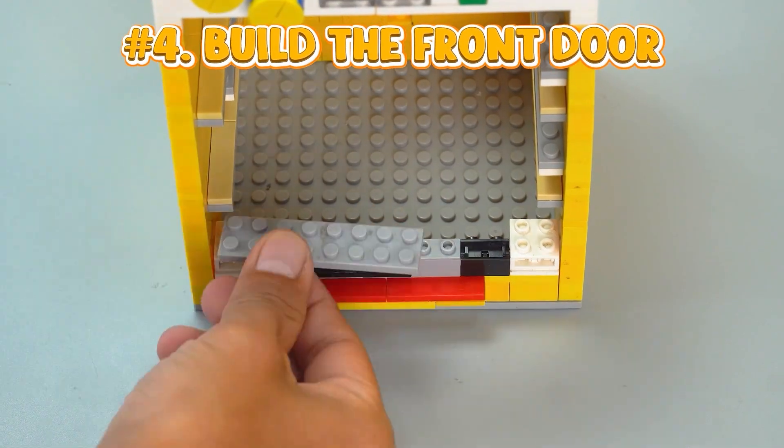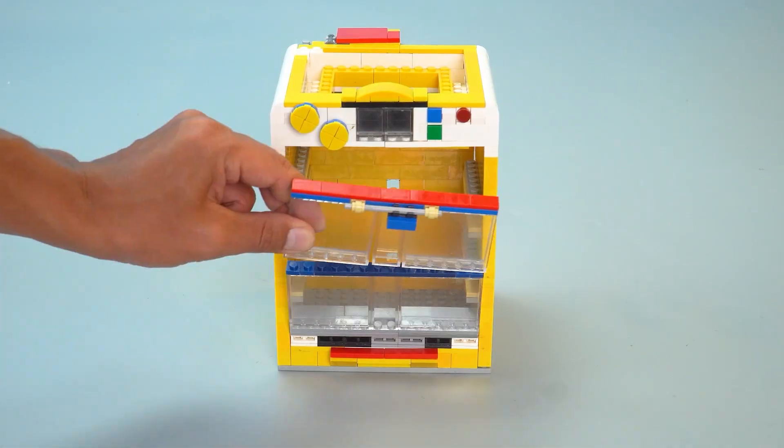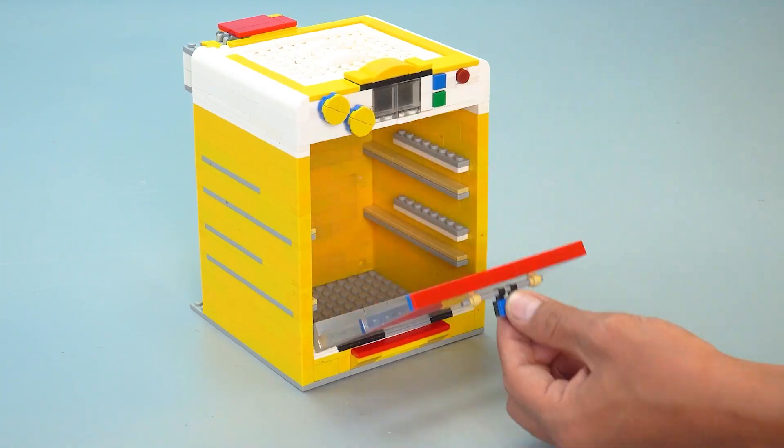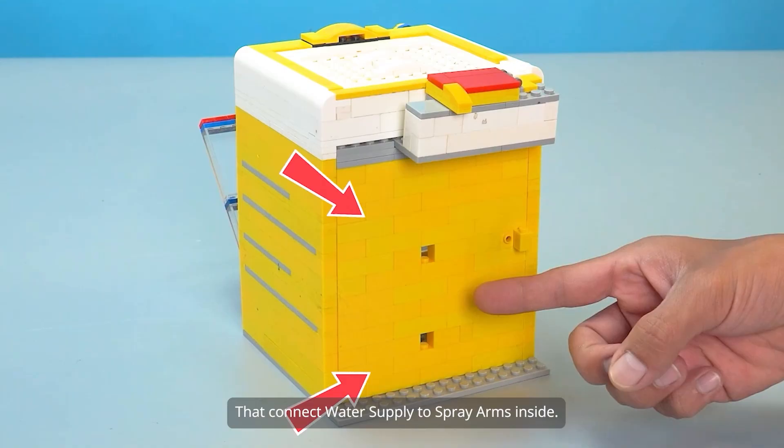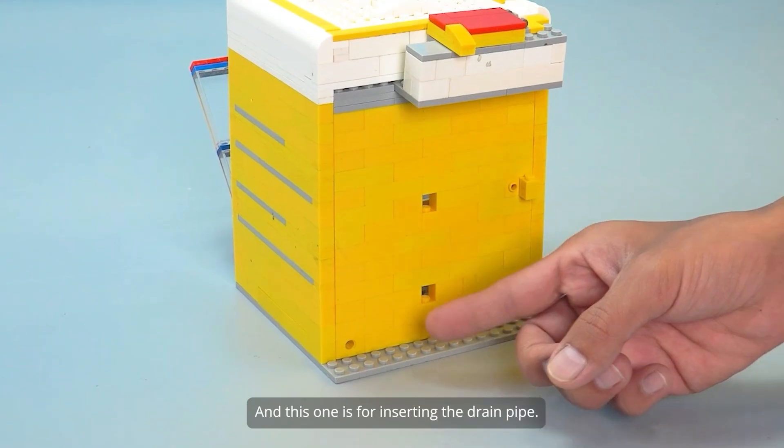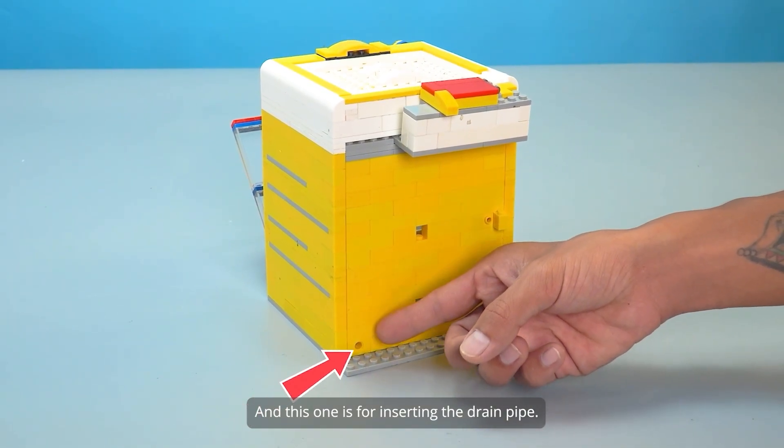Number 4, build the front door. These holes are for inserting two pipes that connect water supply to spray arms inside. And this one is for inserting the drain pipe.